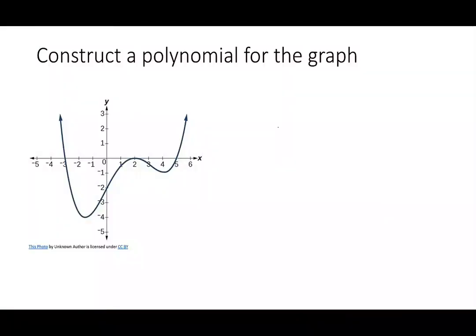So this time I'm going to give you the graph and say construct a polynomial for a graph, and we're going to leave these in factored form. What I want to notice is I have a zero at negative 3, I have a zero at positive 2, and I have a zero at positive 5.